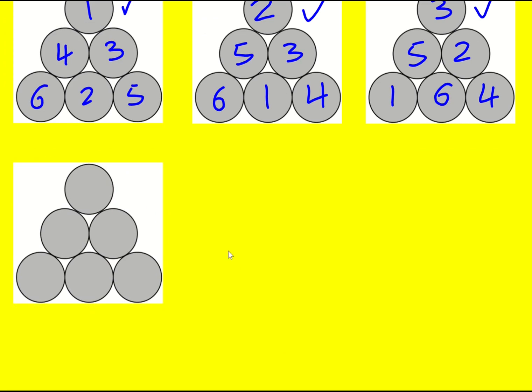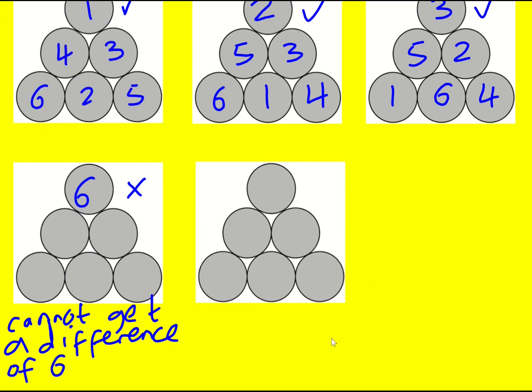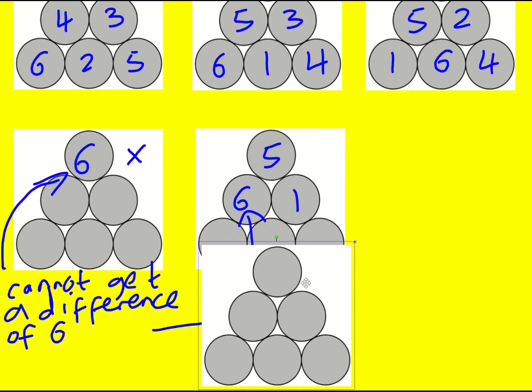Now I'm going to start from the other end. There's no way that 6 can work—you cannot get a difference of 6. And if we go with 5, well, it's going to have to be 6 and 1 or 1 and 6, and again there's a problem here. So both of these are out, which just leaves 4.